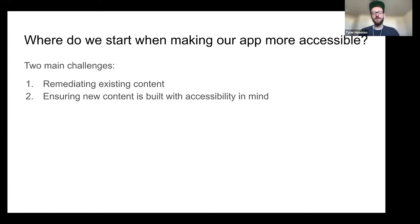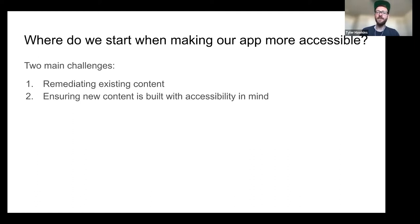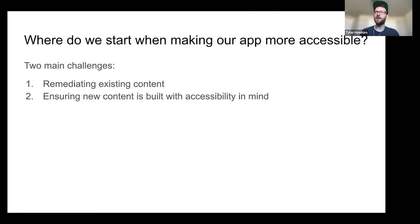Assuming you've got buy-in, where do you actually start when making your app more accessible? There are really two main challenges: remediating existing content, and making sure all new content is built with accessibility in mind. It's not enough to remediate the old stuff — you don't want to keep digging yourself into a hole by continuing to build inaccessible parts of your product.